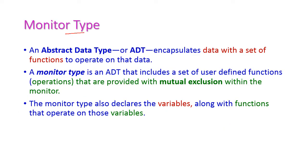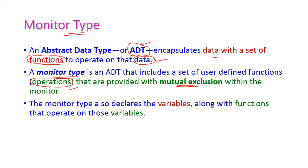First let us see the monitor type. It is an ADT — abstract data type — that encapsulates data with a set of functions to operate on the data. The functions will perform some operations on the data, hence it is called an abstract data type. Monitor is also an ADT which includes a set of user-defined functions or operations that provide mutual exclusion within the monitor.